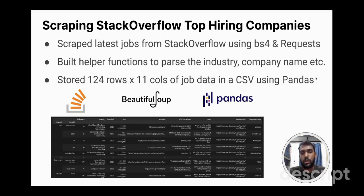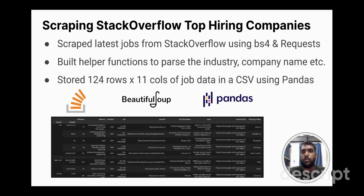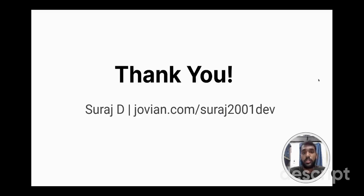My third project revolves around web scraping Stack Overflow job updates using Python. This project involves scraping job updates from Stack Overflow using libraries such as BeautifulSoup and Requests. Various helper functions were developed to scrape details regarding the job, such as company name, industry, and the tech stacks they use. The final dataset consists of around 124 rows and 11 columns of job data in a CSV format using Pandas. Thank you everyone for watching.